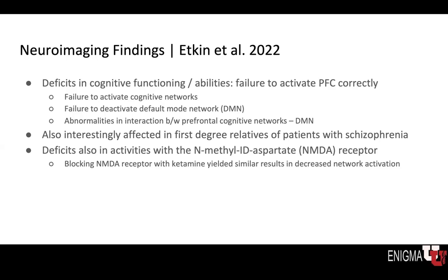What's also interesting is that we see this disconnectivity, or this failure to regulate, in first-degree relatives of patients with schizophrenia. Studying relatives is important because there is a treasure trove of data to be explored, both in terms of genetic and neuroimaging data. Finally, we see deficits in activities involving the N-methyl-D-aspartate, or NMDA receptor — not surprising, as this is one of the receptors also affected according to the disconnectivity literature. Etkin notes that blocking the NMDA receptor with ketamine yielded similar results in decreased network activation.